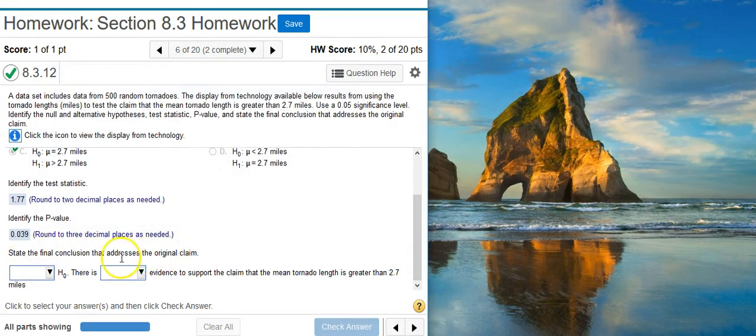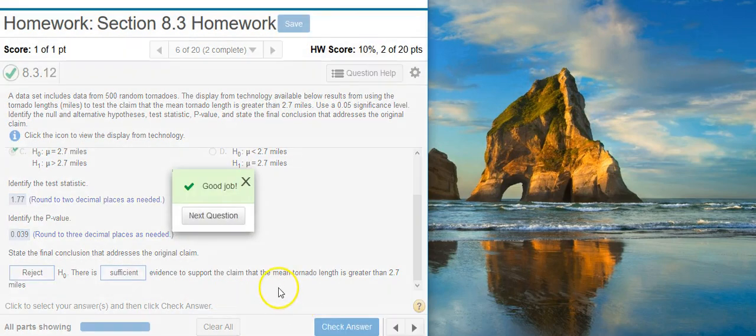And now we're asked to state the final conclusion that addresses the original claim. We do that by comparing our p-value with our significance level. So here's our p-value, 3.9%. We're asked to compare that with the alpha level of 5%, so our p-value is definitely less than our significance level. That means we're inside the region of rejection, and therefore we reject H-naught. Because we reject H-naught, we can say that there is sufficient evidence. Good job!